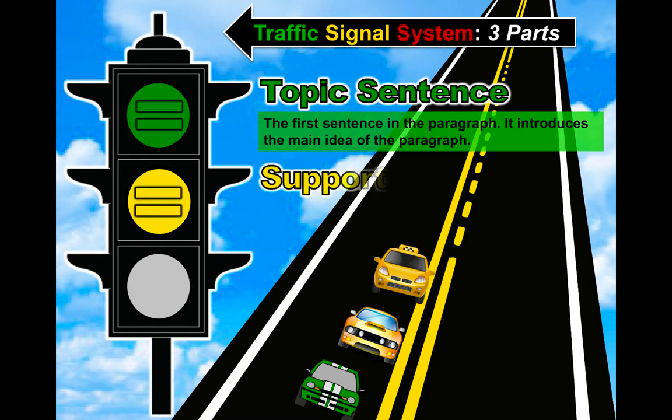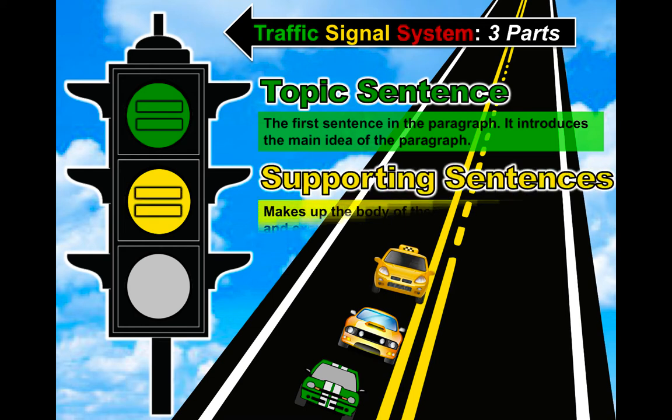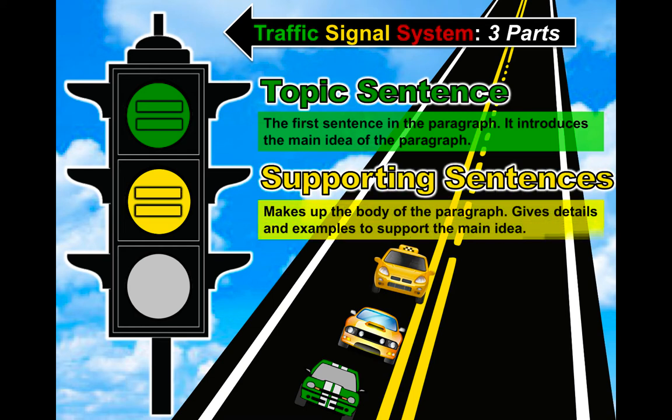The color yellow stands for the supporting sentences. Supporting sentences make up the body of the paragraph and give details and examples to support the main idea.